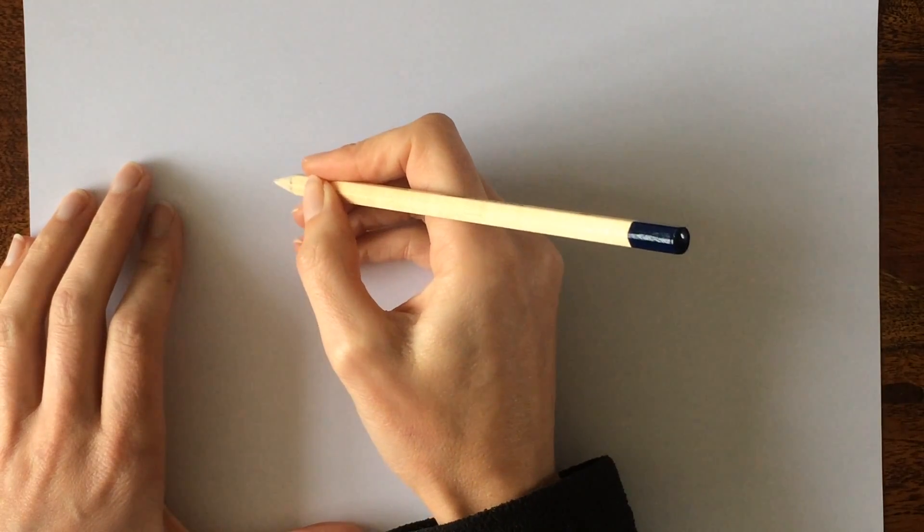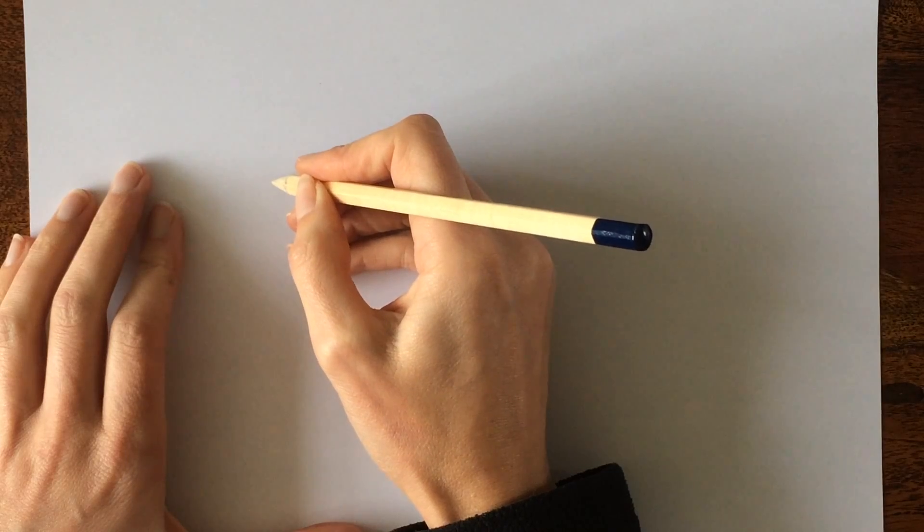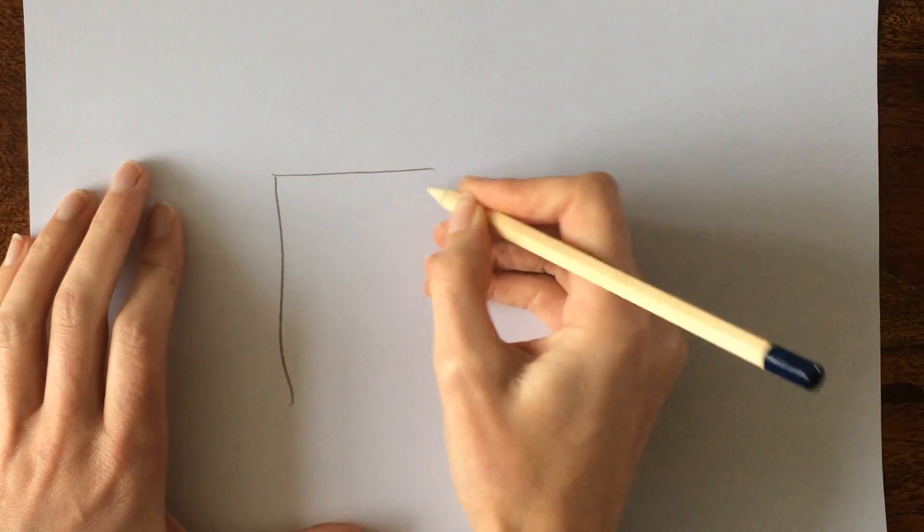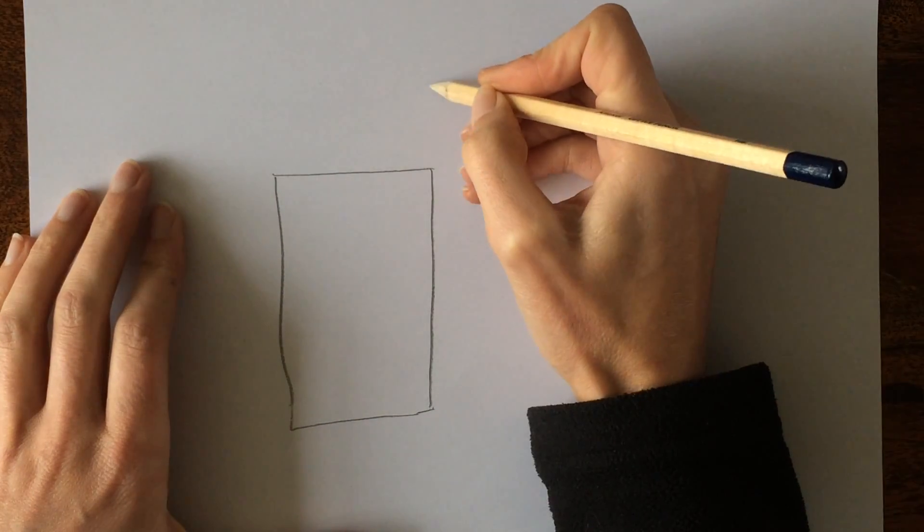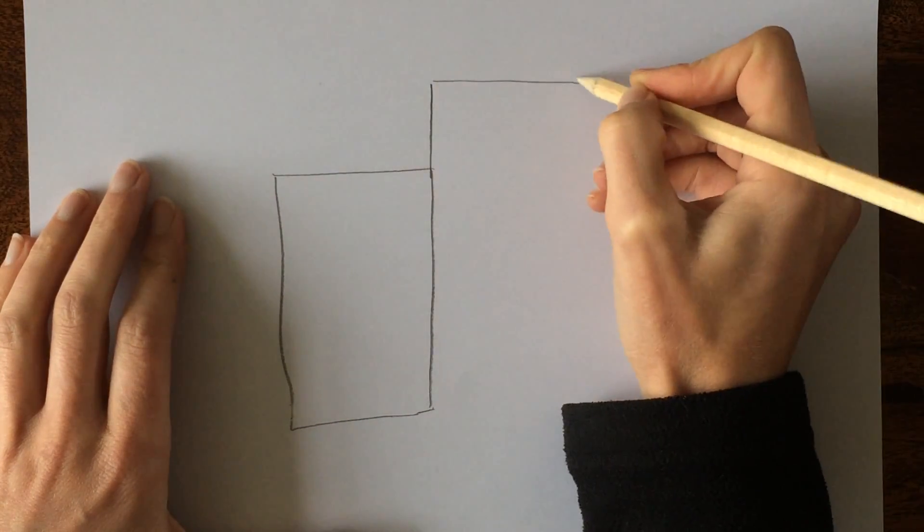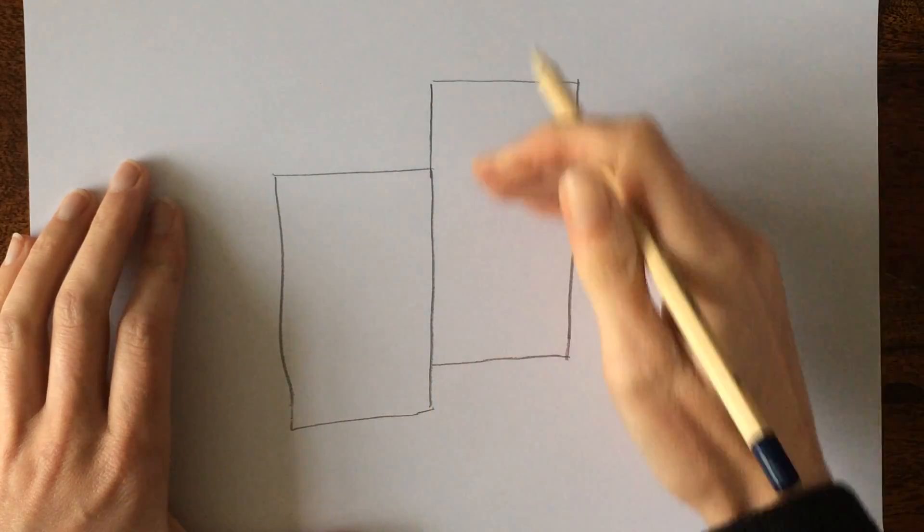If you get asked to draw this plate boundary in the exam, the easiest way to do this is to draw a rectangle followed by another rectangle next to it, but at a slightly different height, slightly further up.